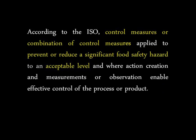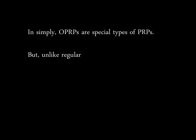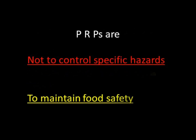OPRP: according to ISO, it is a control measure or combination of control measures applied to prevent or reduce a significant food safety hazard to an acceptable level, and where action criteria and measurements or observation enable effective control of the process or product. Simply put, OPRPs are special types of PRPs, but unlike regular PRPs, they do control specific hazards and steps in the process. PRPs are not used to control specific hazards — they stand throughout the food chain to maintain food safety.